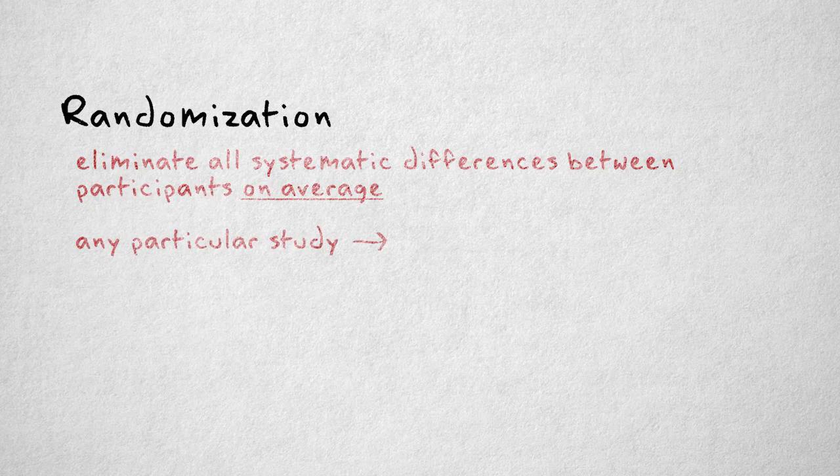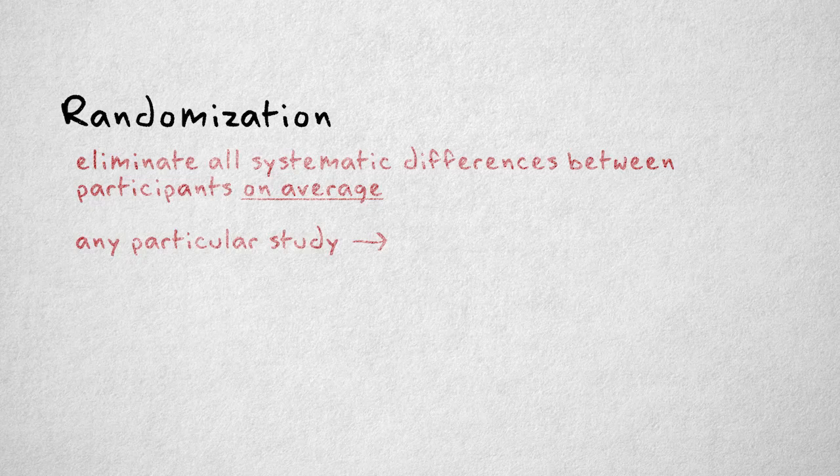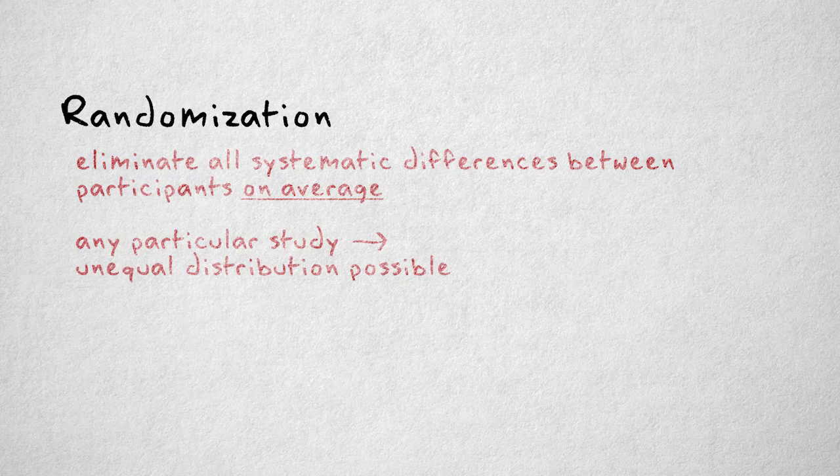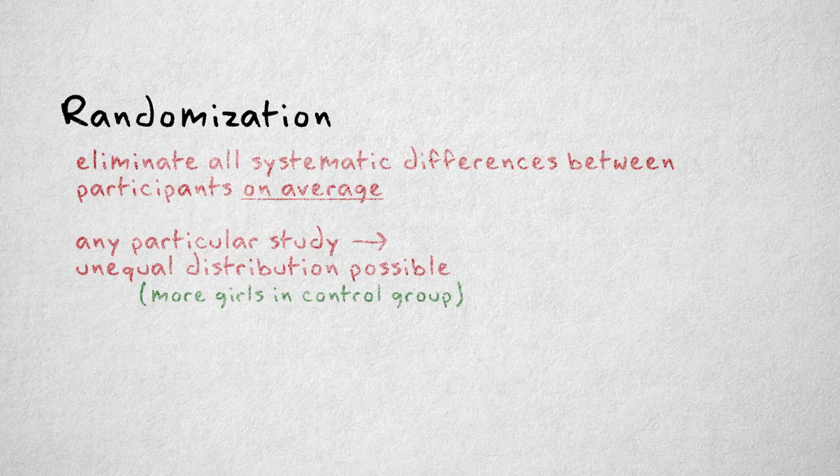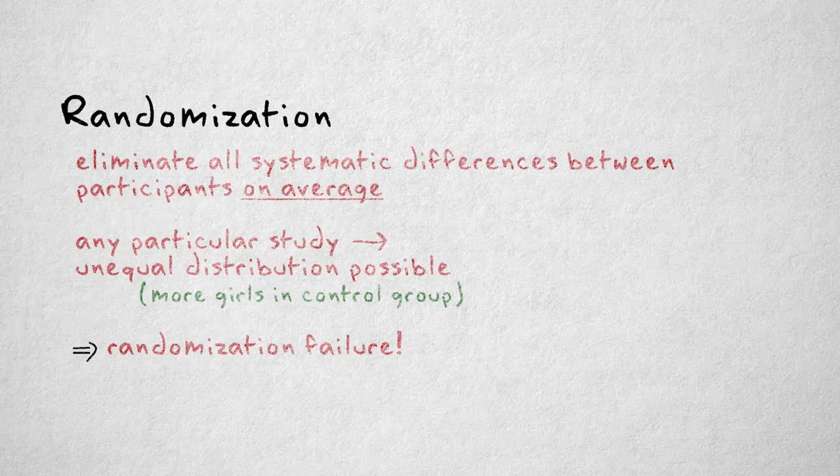Of course, in any one particular study, it is possible, entirely due to chance, that we end up, for example, with more girls in the control group, possibly explaining why this group is less aggressive. I call this a randomization error.